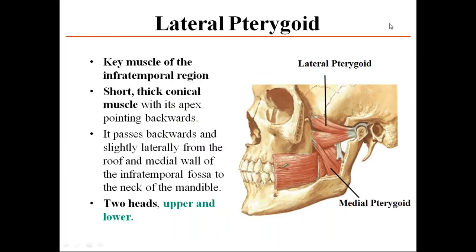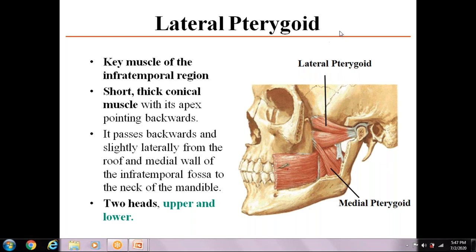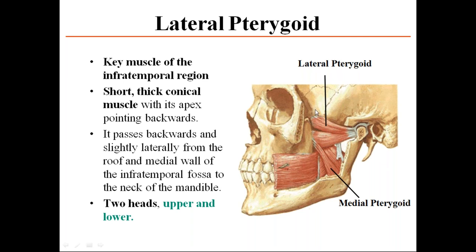The lateral pterygoid muscle is the key muscle of the infratemporal region. It is a conical-shaped, short, thick muscle with its apex pointing backwards toward the temporomandibular joint. It passes backward and slightly laterally from the roof and medial wall of the infratemporal fossa to the neck of the mandible. It consists of two heads: an upper head and a lower head.